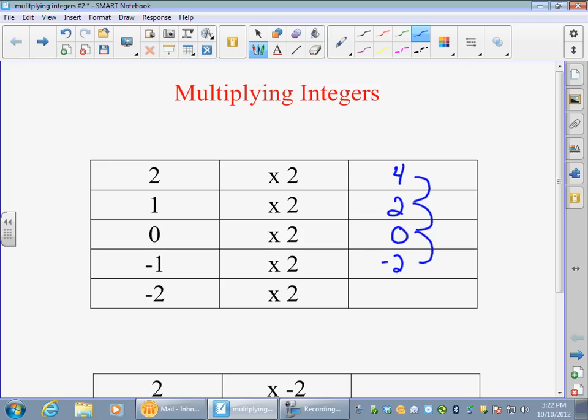And it does, and it gives us negative two. And it should probably go down by two again, which would be negative four. So this is the first chart.